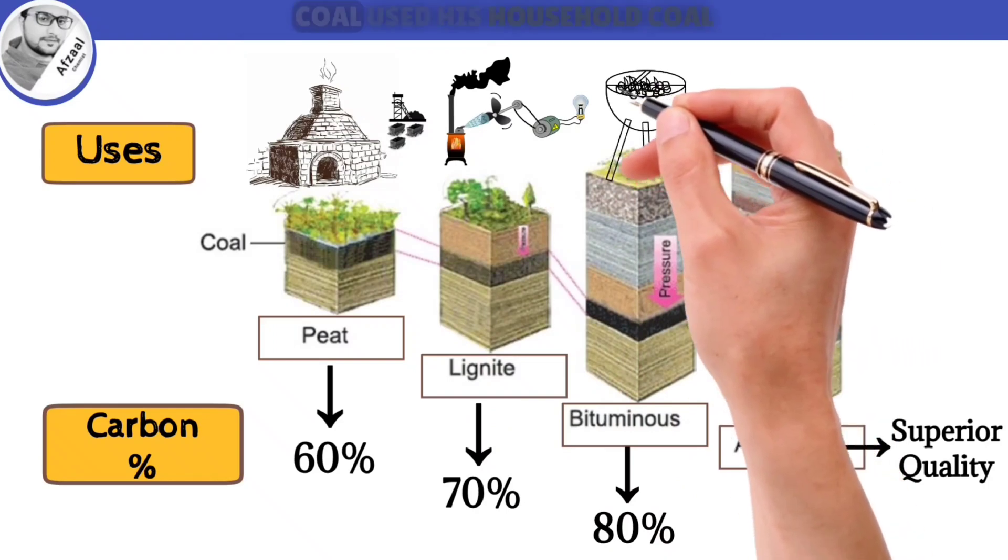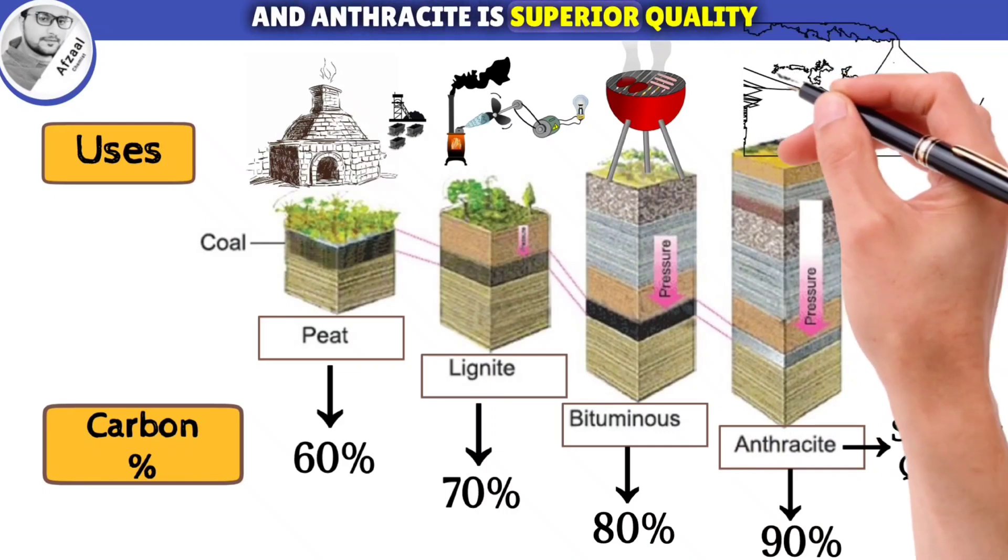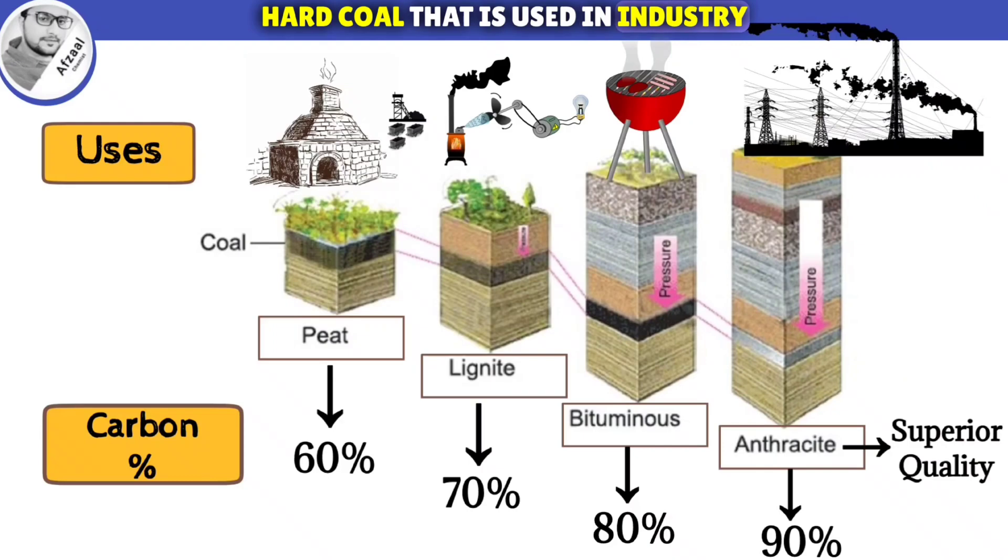Bituminous is a common variety of coal used as household coal. And anthracite is superior quality hard coal that is used in industry.